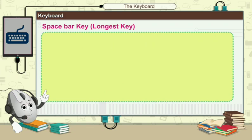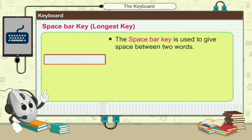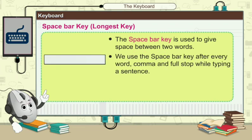Next one is the space bar key — it is the longest key. The space bar key is used to give space between two words. Space bar key use होती है दो words के बीच में space रखने के लिए. We use the space bar key after every word, comma, and full stop while typing a sentence.